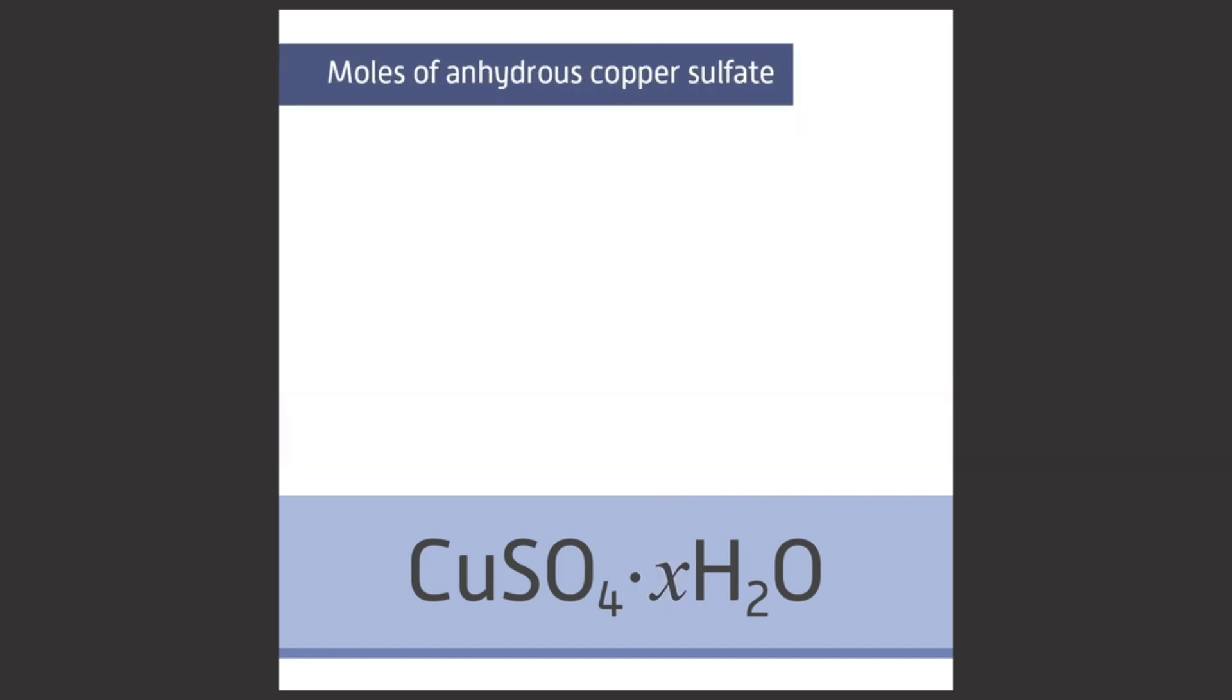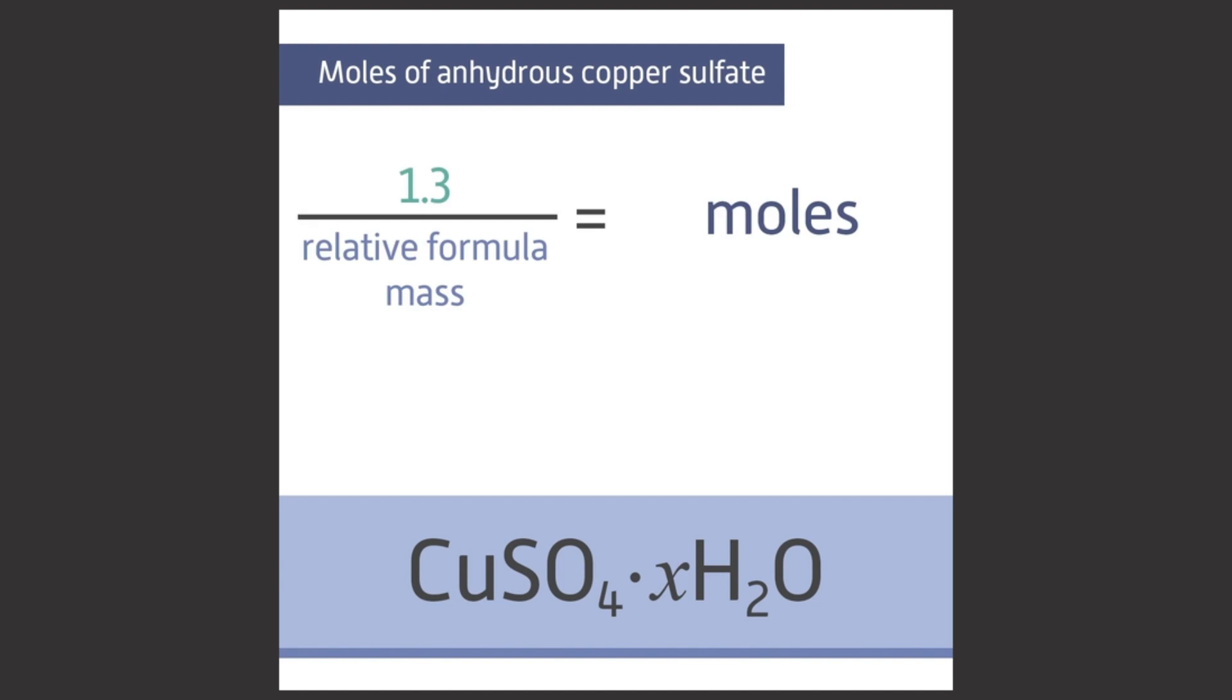First, calculate the number of moles of anhydrous copper sulfate. Remember, moles equals mass divided by relative formula mass. Using the same data as before, this is 1.3 grams of copper sulfate divided by the relative formula mass of copper sulfate, which is 159.5.